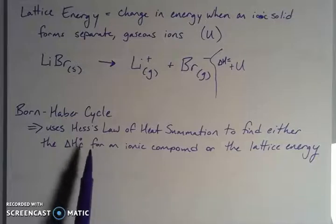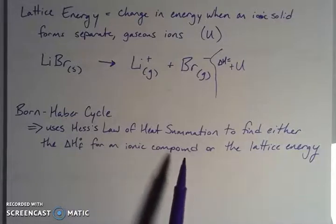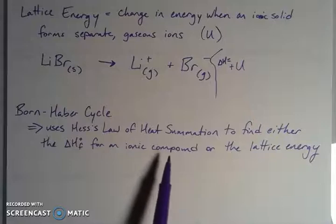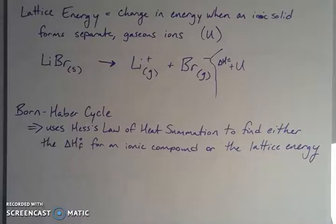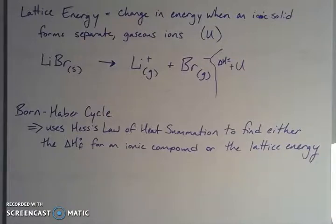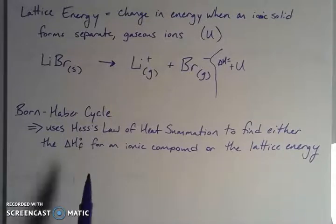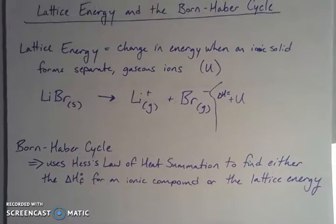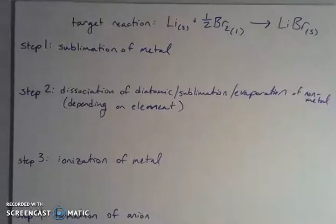You can find either one or the other. If you know the energy of each of the steps of the process, these are state functions. Regardless of the path that it takes to get there, if I sum together all these energies, then I should be able to find the sum of a target reaction. That would be the target reaction in the formation of the ionic compound. Or if I don't know the lattice energy, but I do know the heat of formation, maybe I put it into a calorimeter and actually measured that heat of formation, then I can calculate the lattice energy. The Born-Haber cycle is really useful, and it uses steps that synthesize a lot of the ideas we've talked about in prior videos.